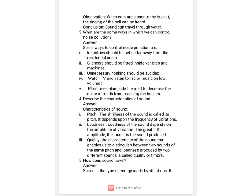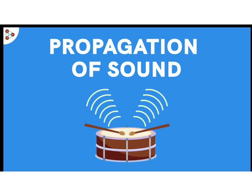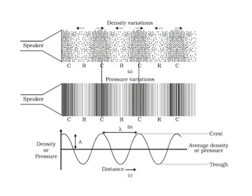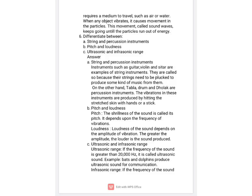The next question is: how does sound travel — how does it move from one place to another? Sound is a form of energy produced by vibrations. These vibrations produce movement in the particles of the medium through which it travels, and sound waves keep on propagating until the particles run out of energy.